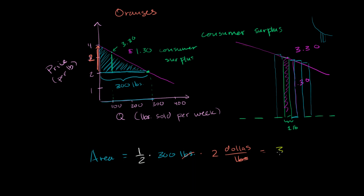So we get 300. And all we're left with is dollars. So the total consumer surplus in this case is $300. And it really is just the area between the demand curve and this price equals two line right over there.